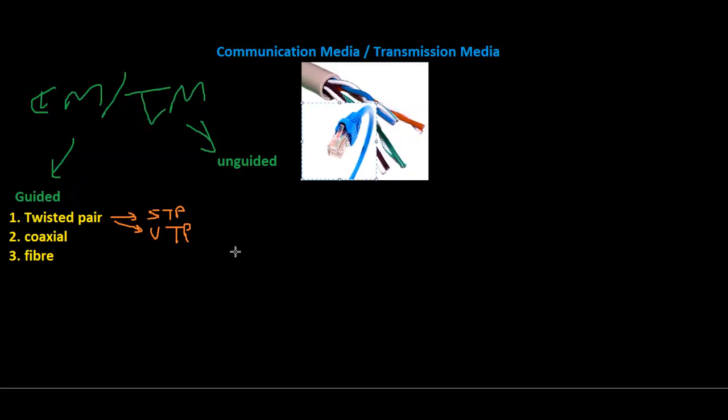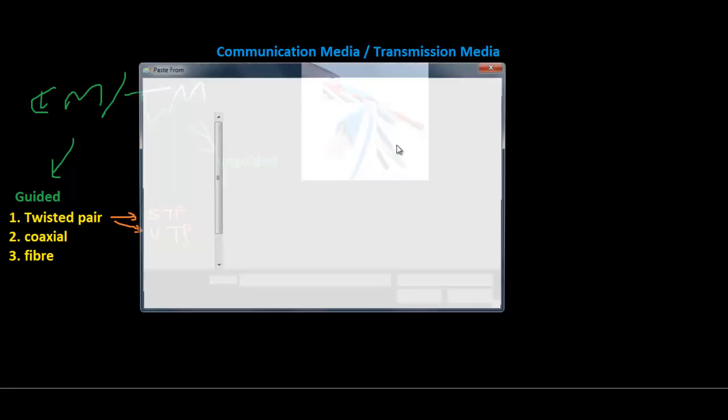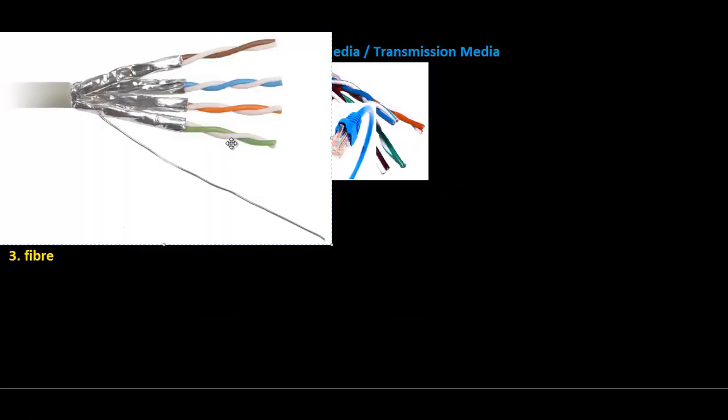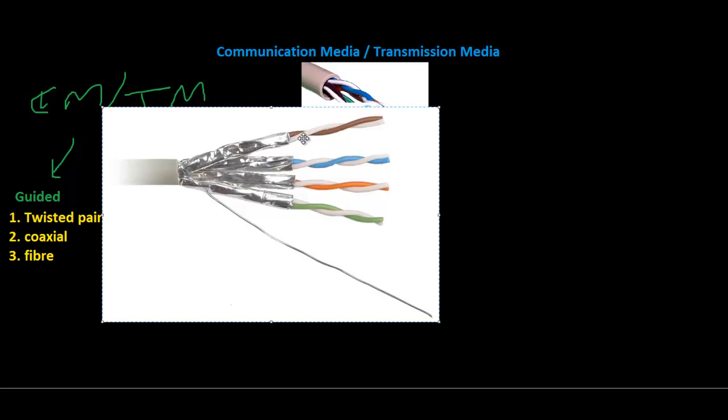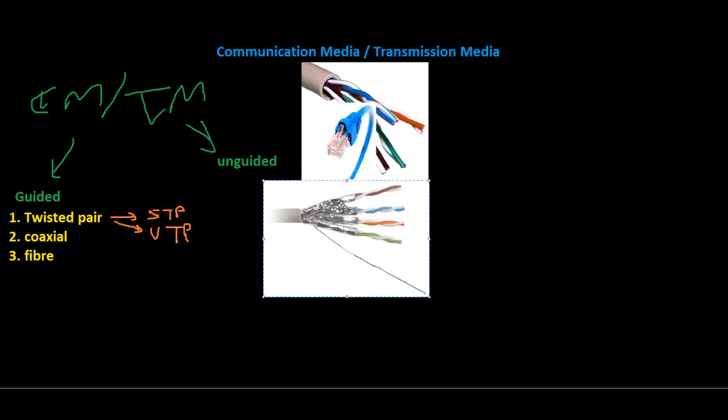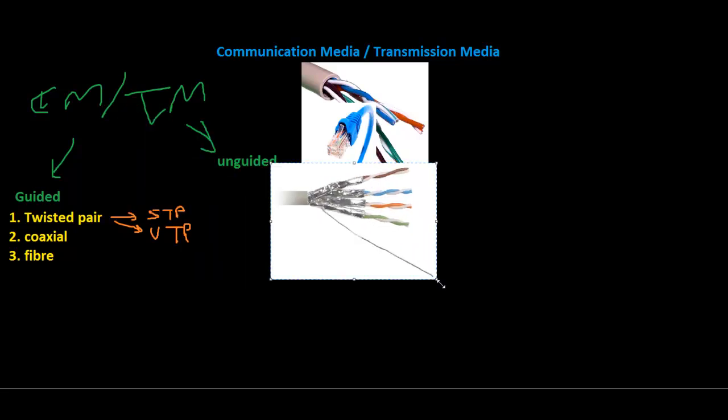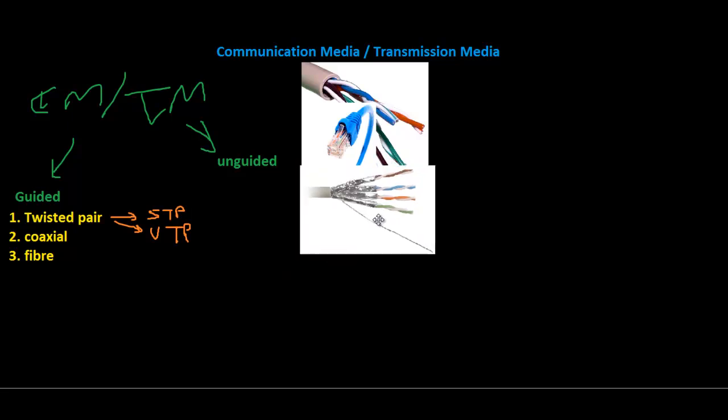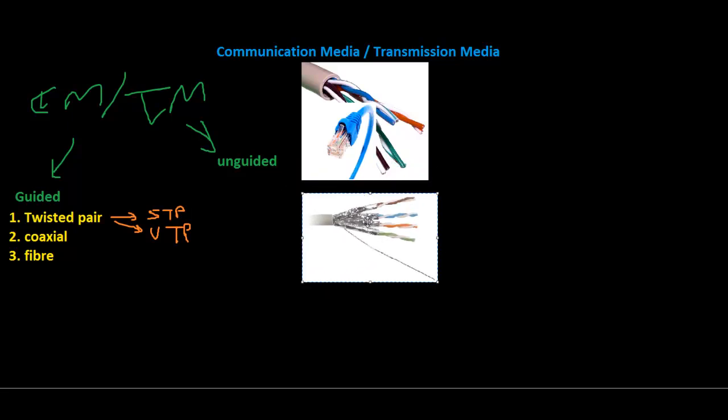Now the shielded twisted pair is similar to the unshielded twisted pair, but it has separate insulation material between each pair. As you can see, each pair of wires has aluminum foil insulator. This further prevents crosstalk or interference. Crosstalk is when two wires interfere with each other. The shielded twisted pair is normally more expensive than the unshielded twisted pair.